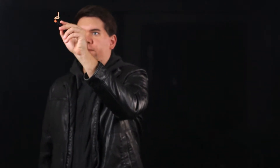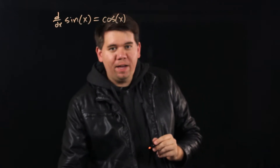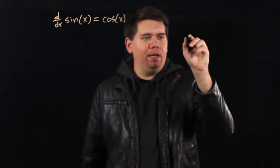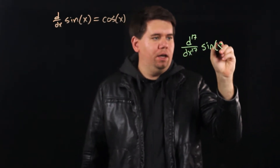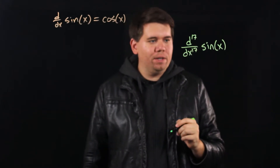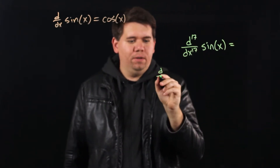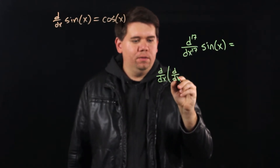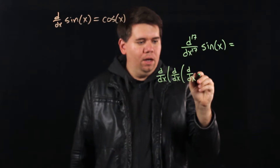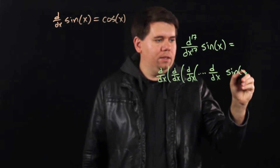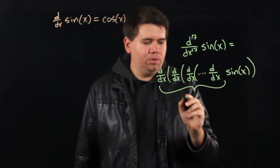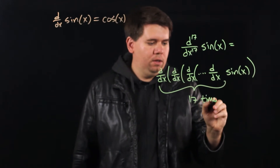We saw that the derivative of sine of x comes out to be cosine of x. But what if I asked you to calculate the 17th derivative of sine of x? When I say the 17th derivative, I mean the derivative of the derivative of the derivative, so on and so on, 17 times — we're going to take its derivative 17 times.